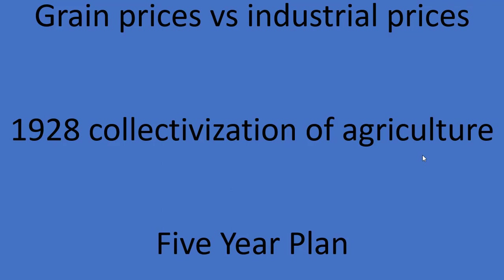In 1928, Stalin ordered the requisition of grain and began the process of collectivizing agriculture. The process of collectivizing agriculture saw peasants forced to give up their land and move onto huge collective farms, some with as many as 30,000 people. Those living on collective farms were given a common set of tools and other resources to share and use to grow food. There was resistance to this process — hundreds of revolts took place across the nation and the military was called in to put them down. Though Stalin slowed down the pace of collectivization, by 1935 nearly the entire agricultural sector had been changed.